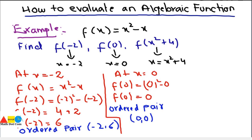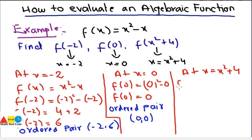Now we evaluate at x = x² + 4. Here x is still unknown, so the value of y will also remain unknown and dependent on x. To find f(x² + 4), we replace x at all places with (x² + 4), giving us (x² + 4)² - (x² + 4).